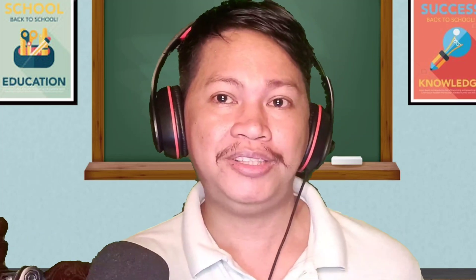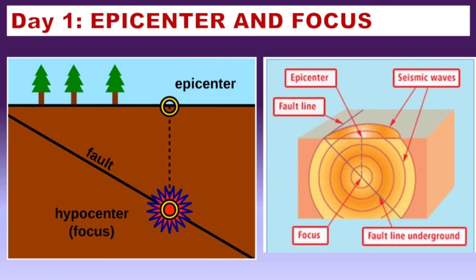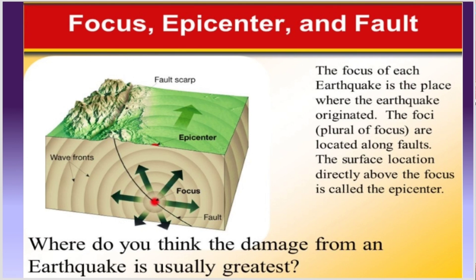I'll now show you some pictures or diagrams to help us understand epicenter and focus better. As you can see in the picture, we have fault, epicenter, and hypocenter. The diagram also shows seismic waves, fault line, and underground focus. The focus of an earthquake is the place where the earthquake originated. The foci — plural of focus — are located along faults. The surface location directly above the focus is called the epicenter.